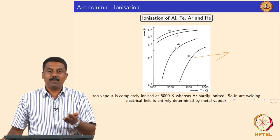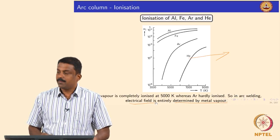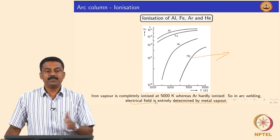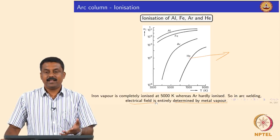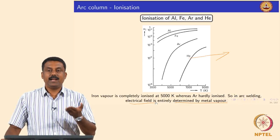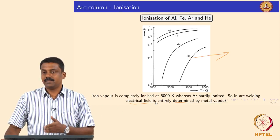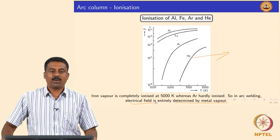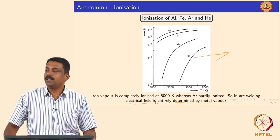In a real welding case, the metal vapor would dictate the electrical field and therefore the temperature. During ignition, your shielding gas would ionize and then the arc is ignited. The moment you have enough metal vapor generated — because the ionization energy of the metal vapors is much lower than the inert gases — the metal vapor would supply the electrons needed to carry forward the electrical field in the arc.